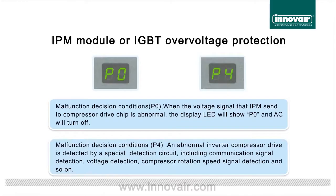Malfunction Decision Conditions, P0: when the voltage signal that the IPM sends to the compressor drive chip is abnormal, the display LED will show P0 and the air conditioner will turn off.